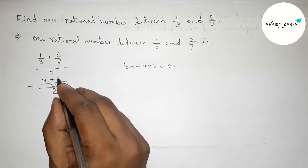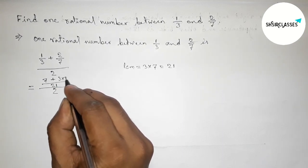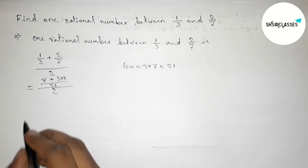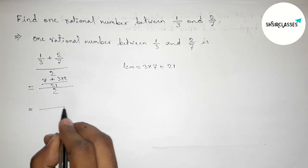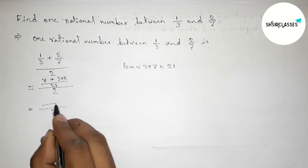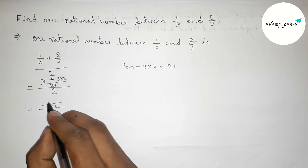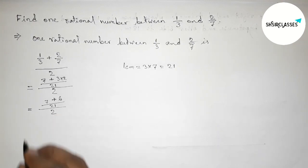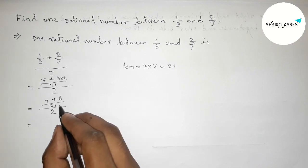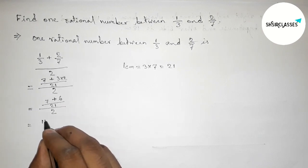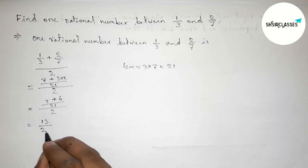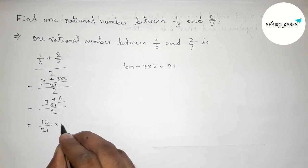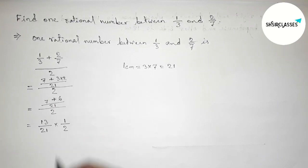So 3 into 2. Now again simplifying this: (7 plus 6)/21 times 1/2, because this 2 will be inverted, so we have to take the inverse of 1/2.